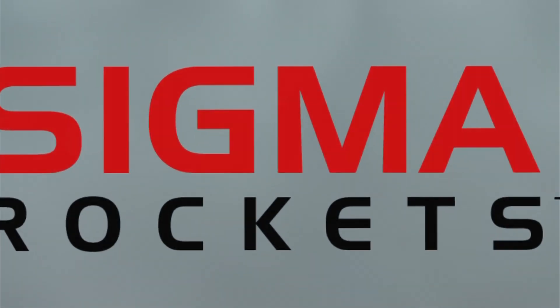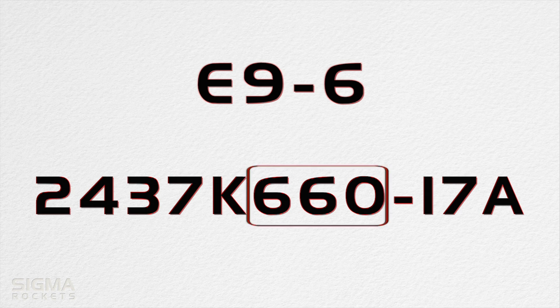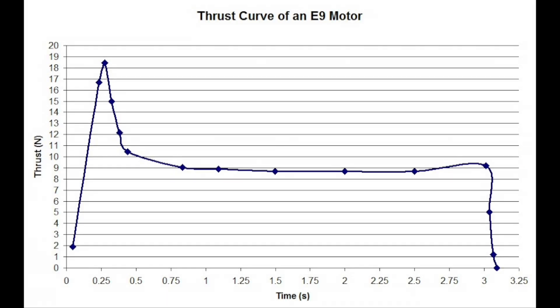We will start with the first number that follows the letter. This number represents the average thrust of the rocket motor and is measured in newtons. For the top motor, E96, the average thrust is 9 newtons. The average thrust on the motor below follows the K and is 660 newtons.